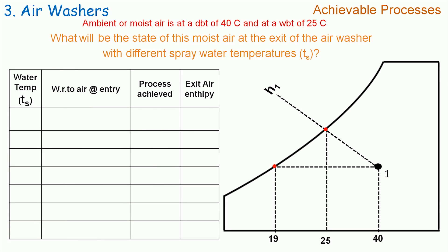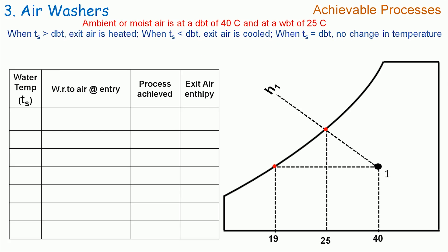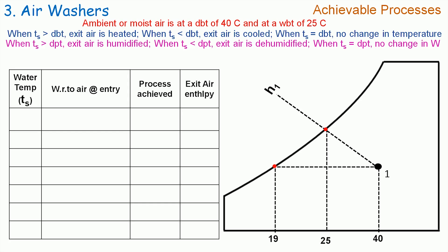Let me first explain how the spray water temperature and the psychrometric properties of the moisture are related. Whenever the spray water temperature TS is greater than the dry bulb temperature, then the exit air is heated. Whenever TS is less than the dry bulb temperature, then the exit air is cooled. Whenever TS is equal to DBT, then there is no change in the temperature of the moisture. Similarly, whenever TS is less than dew point temperature, then exit air is dehumidified. And whenever TS is equal to dew point temperature, then there is no change in the specific humidity of the moisture.